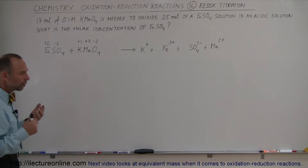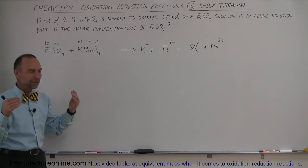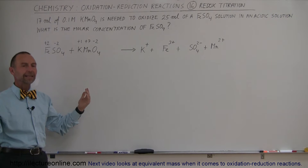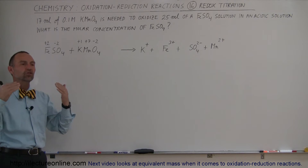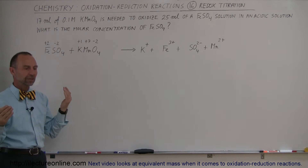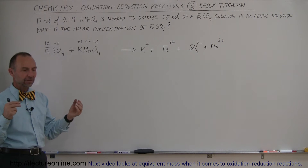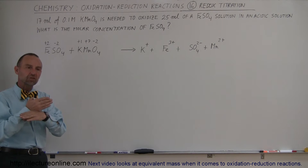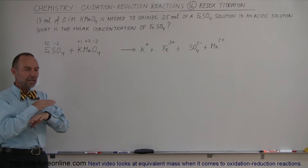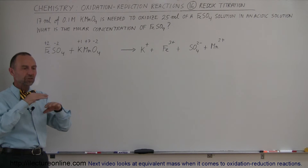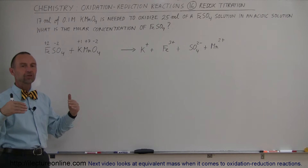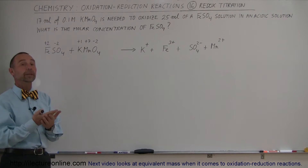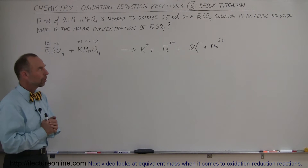So what we want to do there is keep track of how many electrons are exchanged. The basic idea is that if the proper number of electrons are exchanged, the oxidation-reduction reaction is complete and there's no longer an ability to oxidize or reduce.